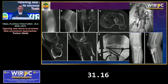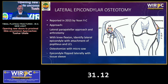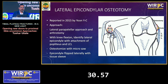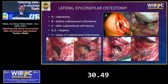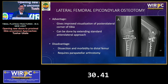The osteotomized Gerdy's tubercle is replaced back anatomically below the plate or fixed separately with screws. The lateral epicondylar osteotomy reported in 2005 by Yun YC involves a lateral parapatellar approach and arthrotomy with knee flexion, identifying the lateral epicondyle with its attachments of popliteus and LCL, then osteotomizing the lateral epicondyle and flipping it laterally. The advantage is improved visualization of the posterolateral corner. Disadvantages include dissection and morbidity to the distal femur and arthrotomy.